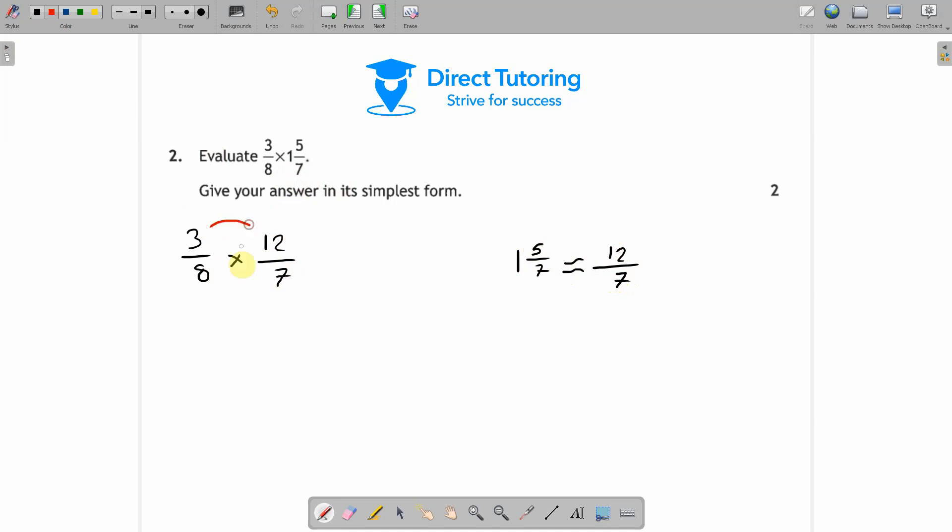When you multiply fractions you just do tops and bottoms times by each other. So 3 times 12 will be 36 and then 8 times 7 is 56.